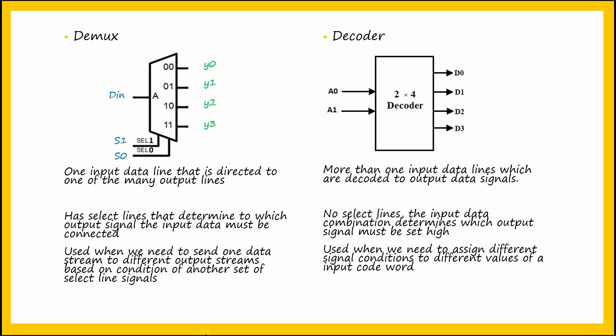Remember the example of a deserializer that we saw in the previous video, where an input stream of 2.4 gigabits per second was sent to four parallel output streams of 622 Mbps.